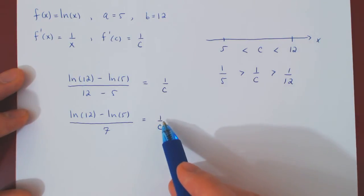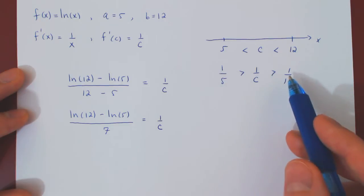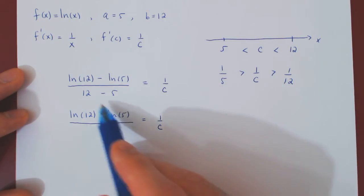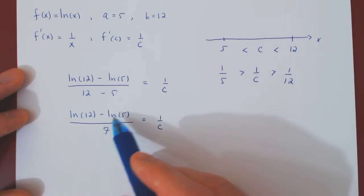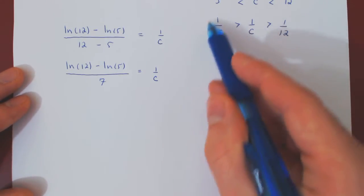But now, we have an inequality, or I should say an upper bound and a lower bound for 1 over c. But 1 over c is equal to this. So whatever is true of 1 over c is also true of this expression. So we can replace, in here, 1 over c by ln of 12 minus ln of 5, over 7.